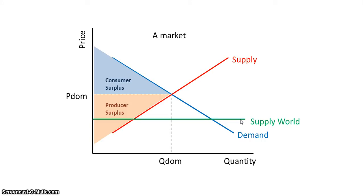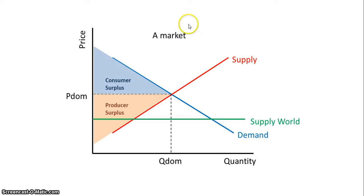In this particular case, we assume that the world supply has come in at a lower price than the domestic supply. That is because we're assuming that the nations this country is trading with have a comparative advantage in producing this good or service, and that those goods and services are coming in at a lower price than the domestic price.